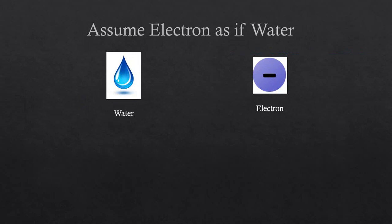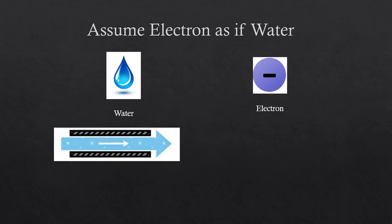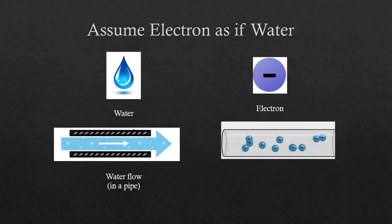So we assume that the electron behaves the same like water. I'm pretty sure you understand how water flows in a pipe. So right now we just change the water into electrons. Electrons flow in a wire, so we call it current.